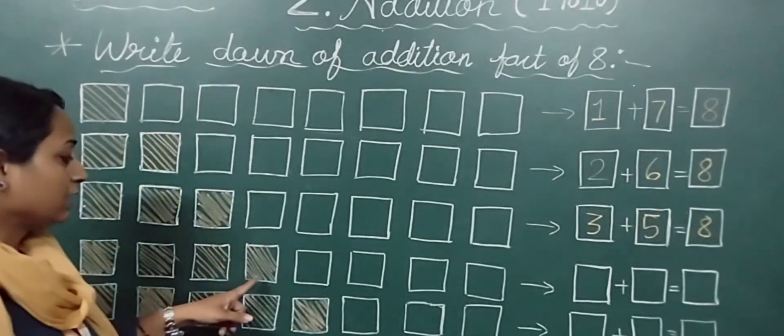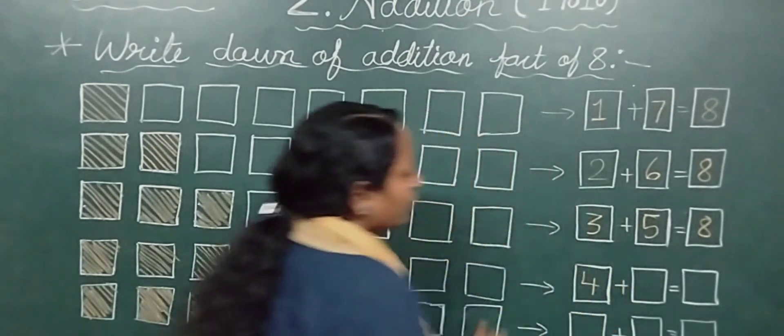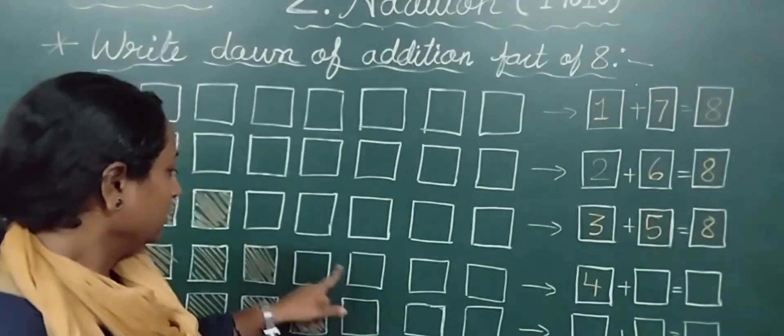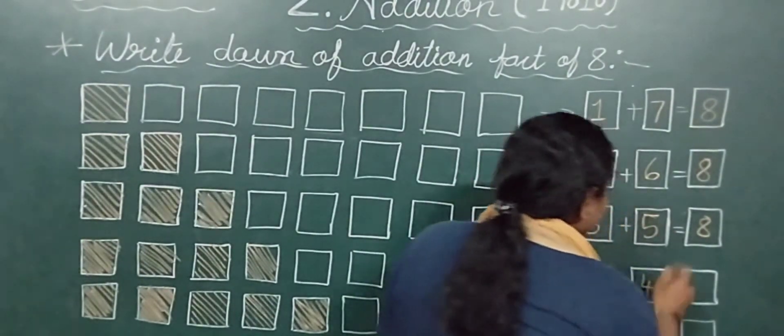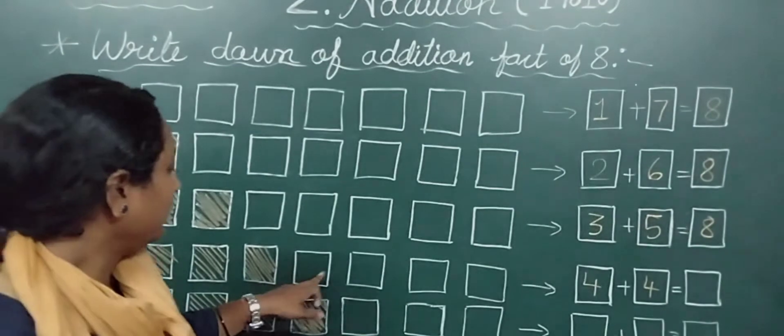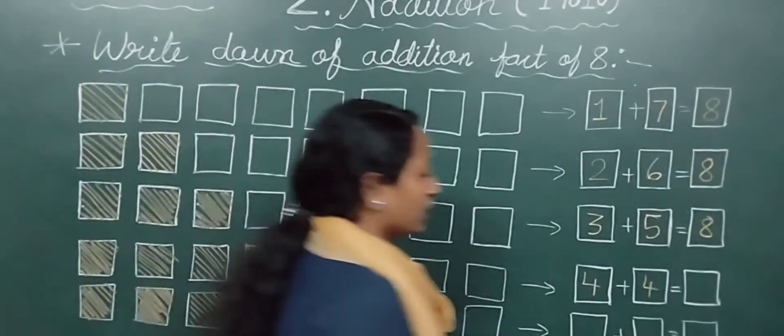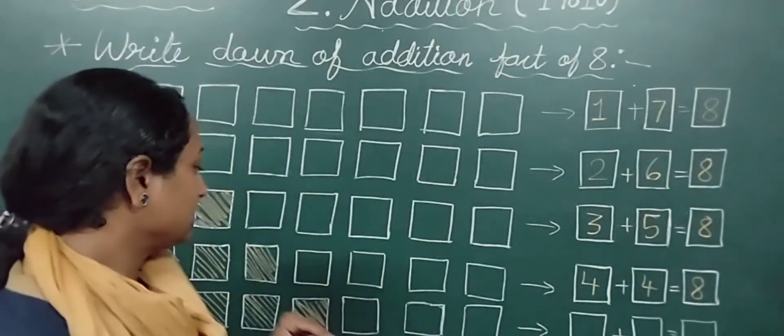Next. How many colored boxes are here? 4. So I will write here 4. How many plain boxes? 1, 2, 3, 4. Also 4. So 4 plus 4, what is the answer? Again count. After 4: 5, 6, 7, 8. Answer? 8. 4 plus 4 is 8.